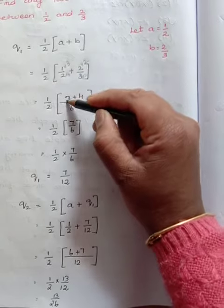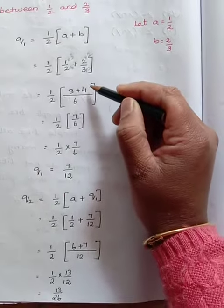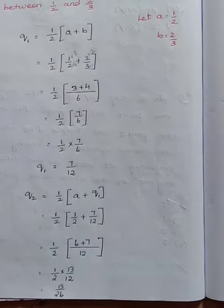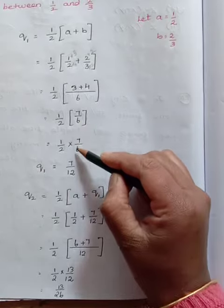So 3 times 1 is 3 plus 2 times 2 is 4. 4 plus 3 is 7 divided by 6. So half into 7 divided by 6.